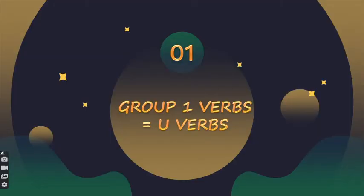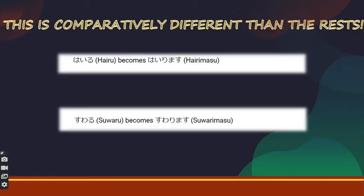Now it's time for group 1 verbs — the u verbs — the most important category because most Japanese verbs belong here. This is comparatively different from the others. Group 3 was irregular; group 2 was remove ru and add masu. For group 1, look at the examples: 'hairu' becomes 'hairimasu,' 'suwaru' becomes 'suwarimasu.' Can you understand the change? The u sound at the end becomes i.